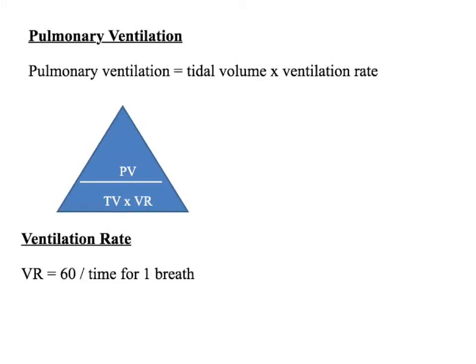Similar to how we had to calculate heart rate individually before, you might need to calculate ventilation rate or breathing rate by 60 divided by the time taken for one breath, because there are 60 seconds in a minute, so time being in seconds.